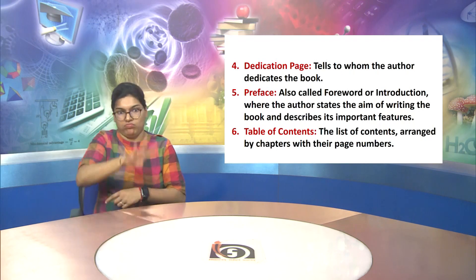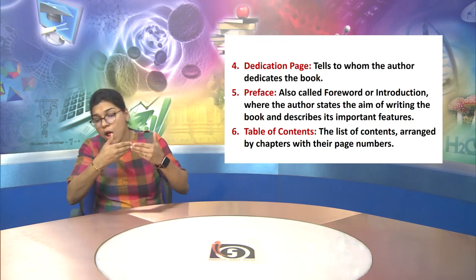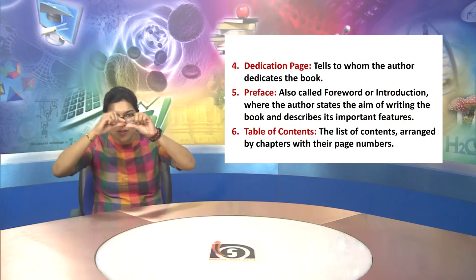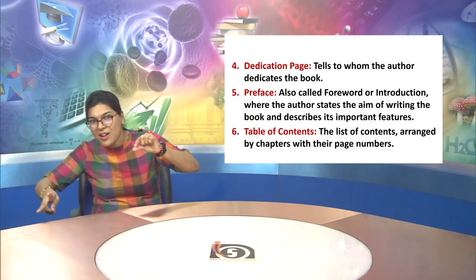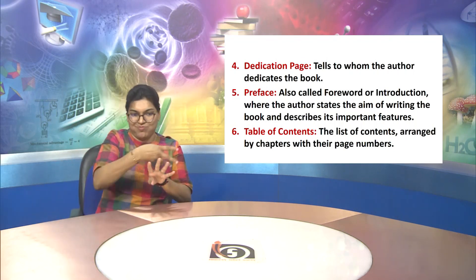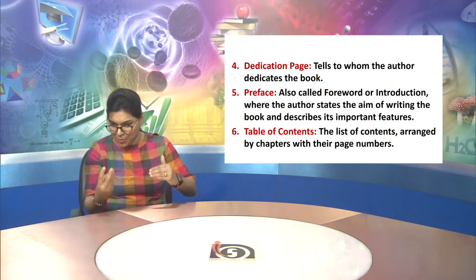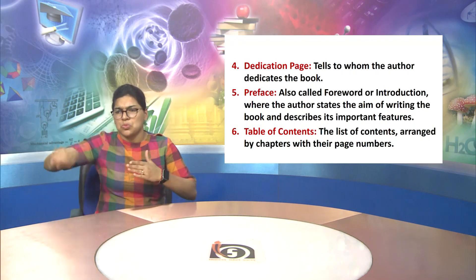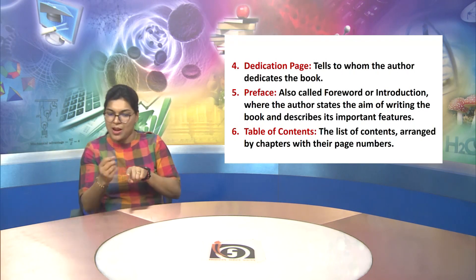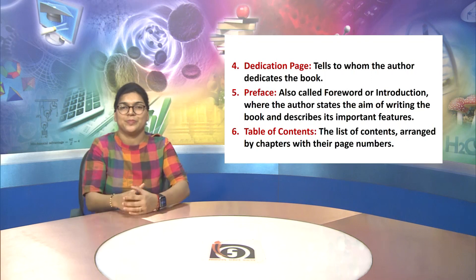Point 6 is the Table of Contents, which lists the content arranged by chapters with their page numbers.